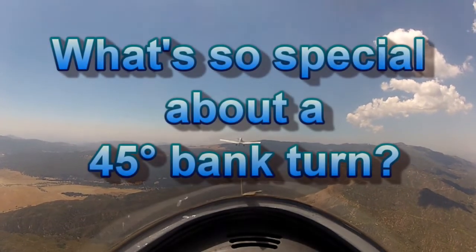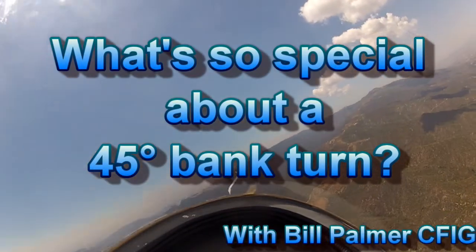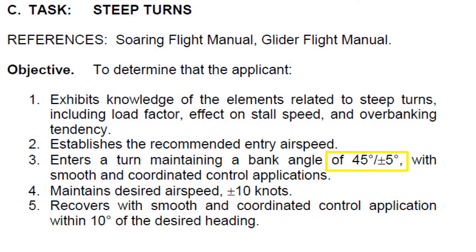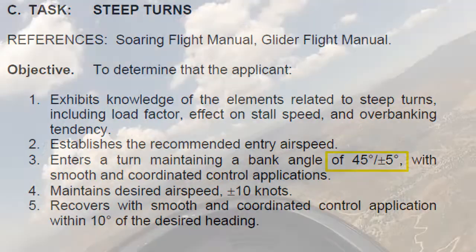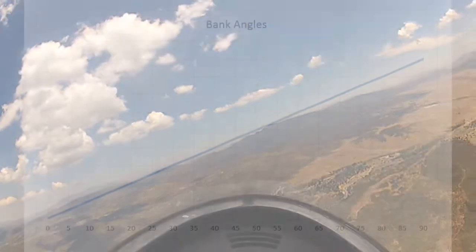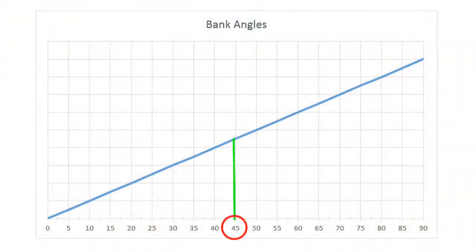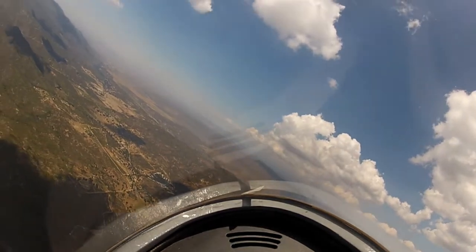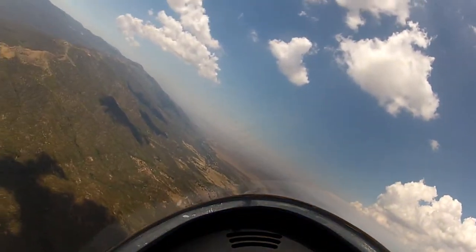What's so special about a 45-degree bank turn? You probably know that a 45-degree bank turn is a required maneuver on glider check rides. For both private and commercial, the pilot must perform this maneuver and be able to maintain it within 5 degrees of bank, without an attitude indicator. Why is this? Is the 45-degree bank just an arbitrary point between level and knife-edge bank angles? Of course not. Let's take a look at the dynamics of turning performance and see if the 45-degree bank is really anything special.